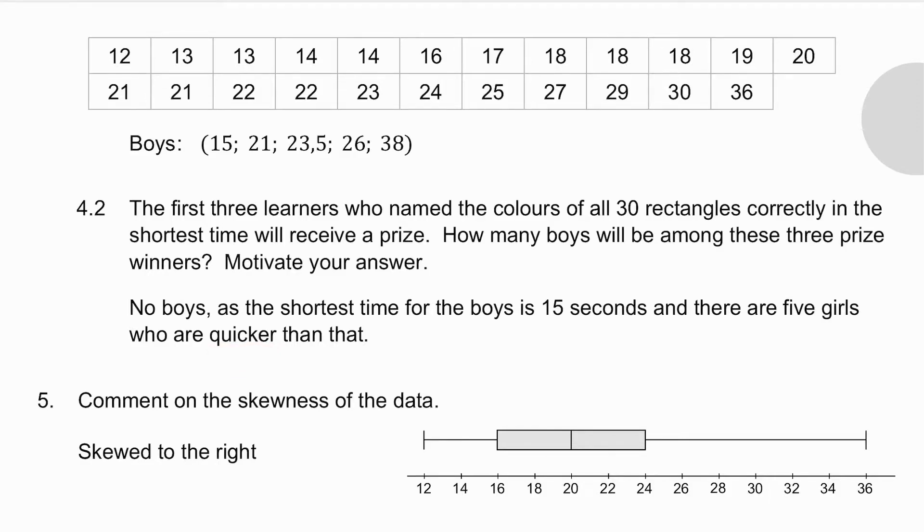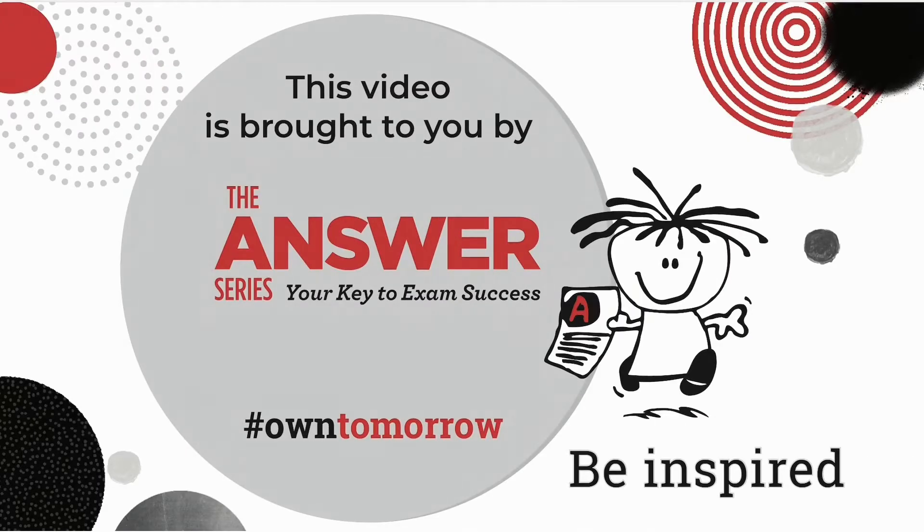The last question is to comment on the skewness of the data. You will notice the whisker on the right is much longer than the rest, which means the data is skewed to the right. You should now understand these concepts.